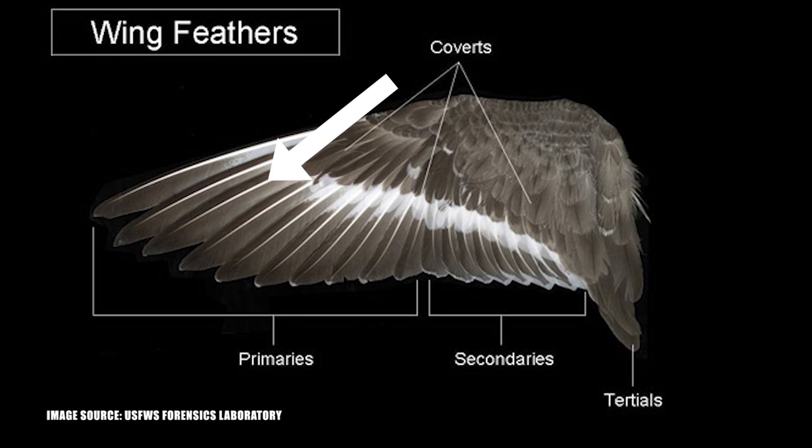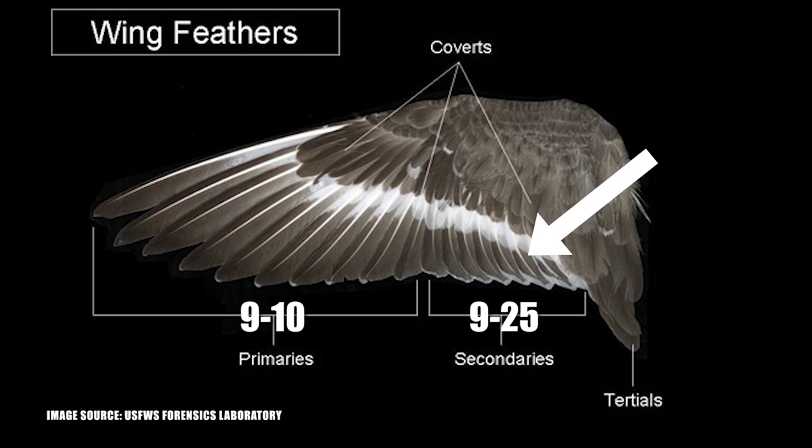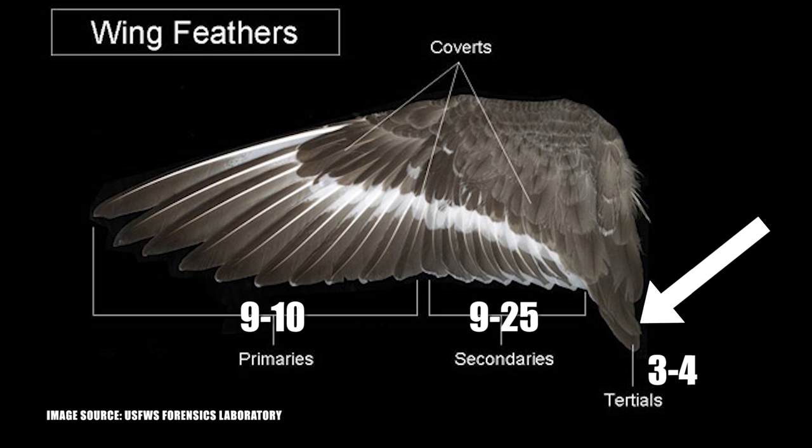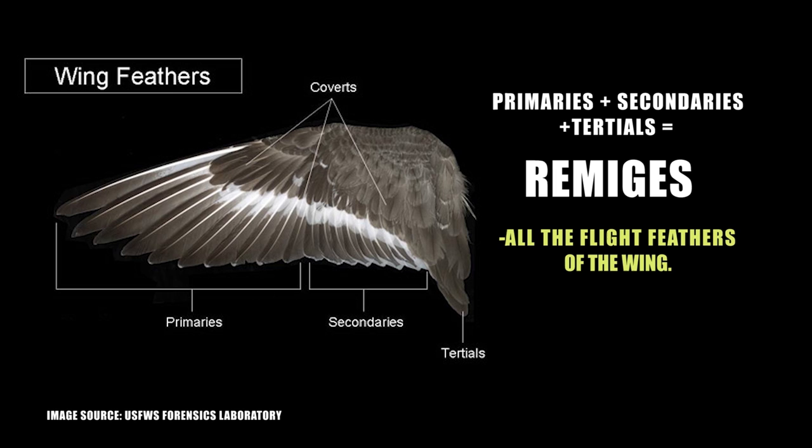The primaries are the outer flight feathers — most birds have 9 or 10. The secondaries are the inner flight feathers that can vary from 9 to 25 depending on the bird type. The tertials are the innermost flight feathers, normally 3 to 4 in number. Together, the primaries, secondaries, and tertials make up the remiges — all the flight feathers of the wing.